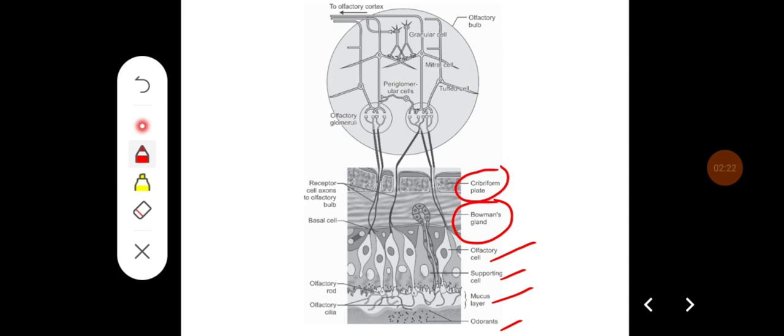And in olfactory bulb, they mainly have the mitral cells and tufted cells and they have inhibitory interneurons, that is granular cells and periglomerular cells, where they form synapse with receptor axons and they form the olfactory glomeruli.